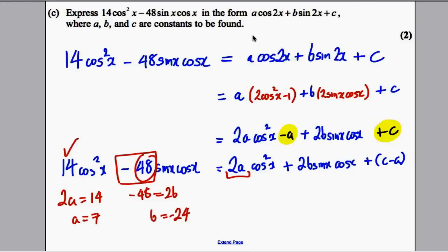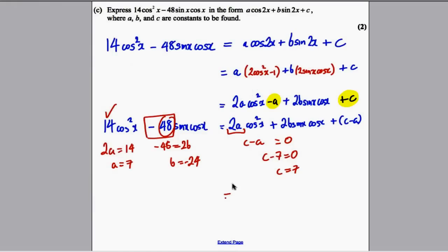Lastly, C - A must be 0 since there's no constant term. As we know A = 7, then C - 7 = 0, so C = 7. Therefore, we express it as 7cos2x - 24sin2x + 7, and we're done.